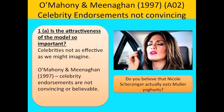Now for evaluation points — you won't need all of them, but it's good to know a few. The first evaluation point is that O'Mahoney and Meenigan (1997) said that celebrity endorsements are not convincing or believable. For example, Nicole Scherzinger may not actually use Müller yogurts. They are questioning whether the attractiveness of the model is so important — Hovland-Yale says we need attractive people, but O'Mahoney and Meenigan said those celebrity endorsements are often not convincing.